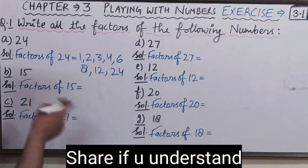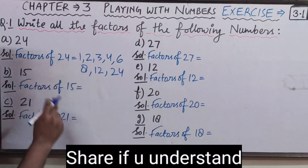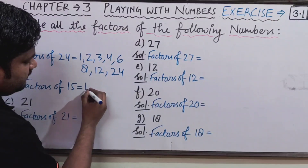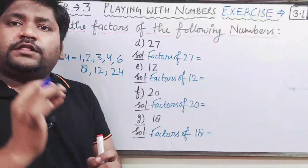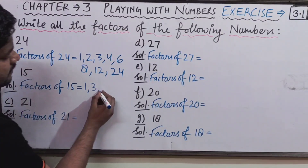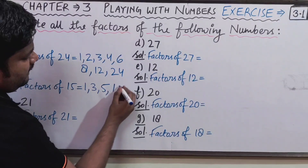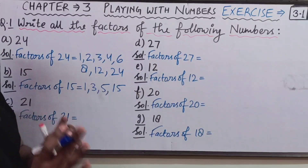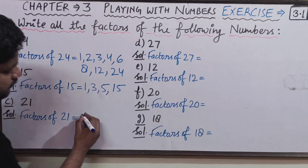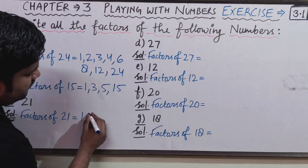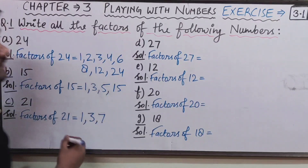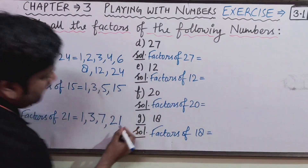Now let us write the factors of 15. One is always a factor of all numbers, then 3 × 5 = 15, and 15 × 1 = 15 — so factors of 15 are 1, 3, 5, and 15. For 21: it is divisible by 1, then 3 × 7 = 21, 7 × 3 = 21, and 21 × 1 = 21, so factors of 21 are 1, 3, 7, and 21.